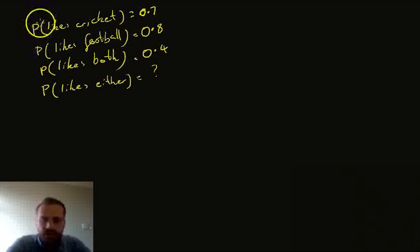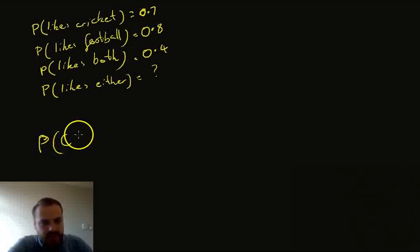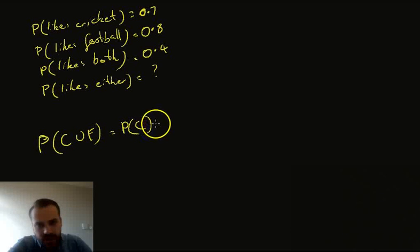Okay, so here's a quick question that we can go through without our Venn diagram. The probability that someone likes cricket is 0.7. The probability that they like football is 0.8. The probability that they like both is 0.4, and the probability that they like either. So either they like cricket or football, we don't care, as long as they like a sport, we don't know that, and that's what we'd like to know. So if we use capital C and capital F as our sets, we can say that the probability of C union F is equal to the probability of C plus the probability of F minus the probability of C intersection F.